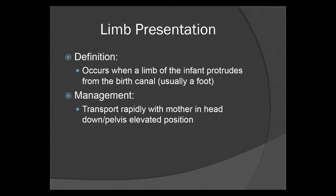Limb presentation occurs when a limb of the infant protrudes from the birth canal — usually a foot, though hands do present sometimes. For a limb presentation, transport rapidly with the mother in a head-down, pelvis-elevated position. This will take the pressure off the infant in the birth canal.